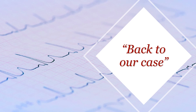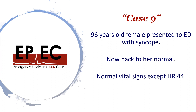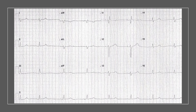Going back to our case: this was a 96-year-old lady who presented to ED with syncope, completely back to normal on presentation, everything fine except the heart rate. Her ECG showed right bundle branch block, right axis deviation, and a second degree heart block — an incomplete trifascicular block — plus syncope. I referred her to a hospital with an in-house cardiology facility for pacemaker insertion, and it was done successfully.